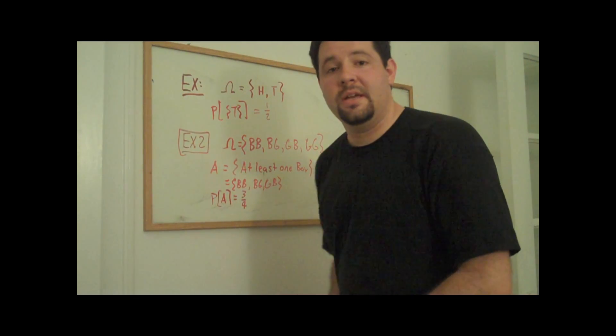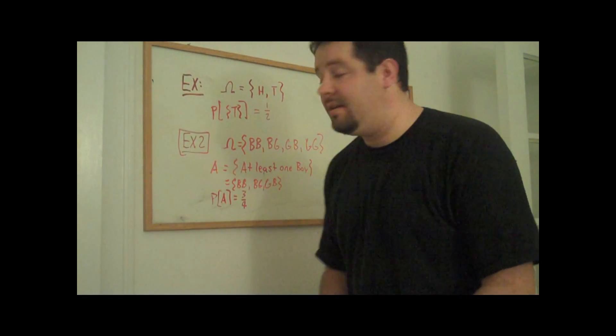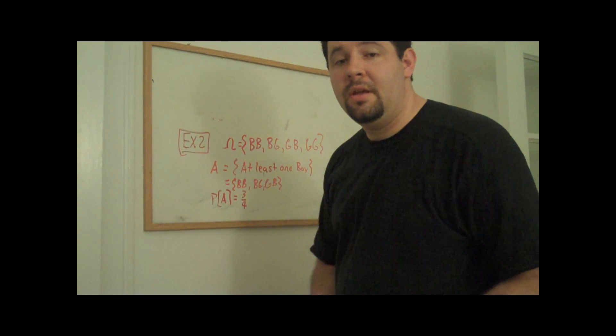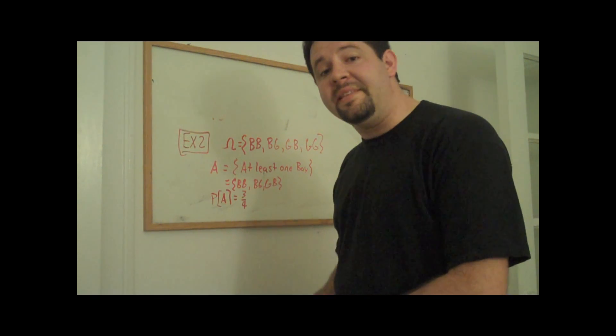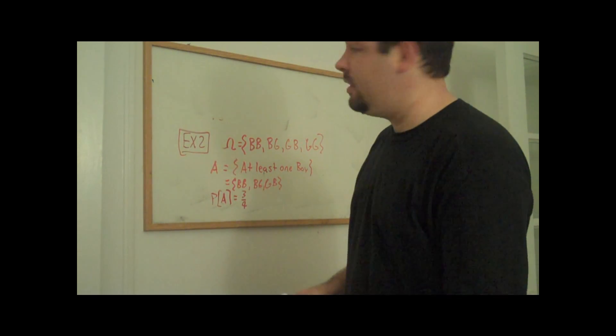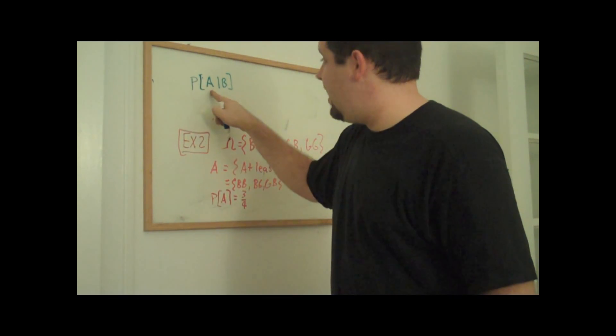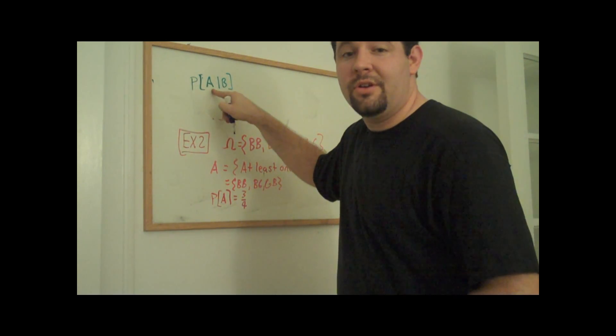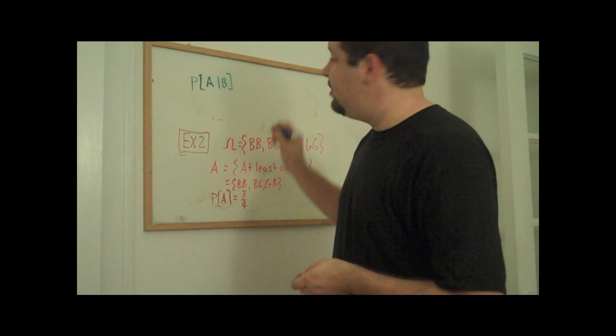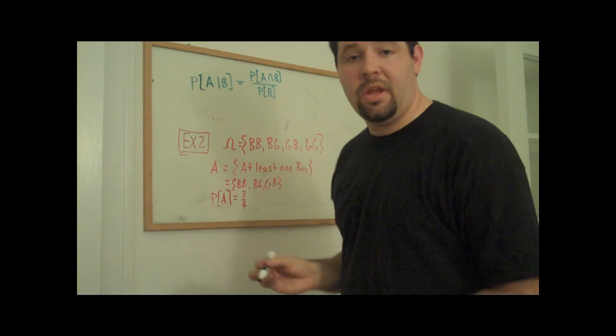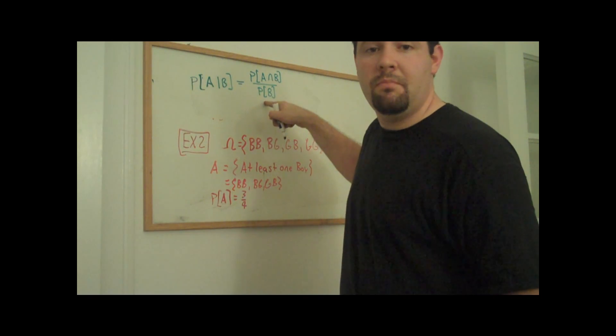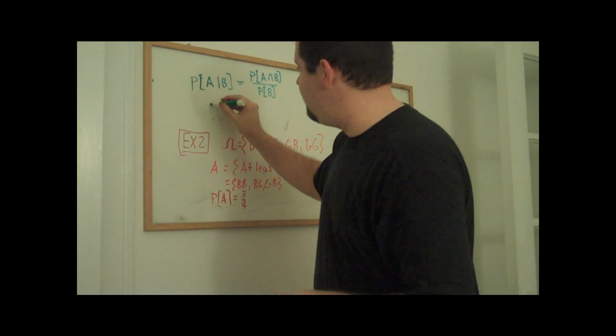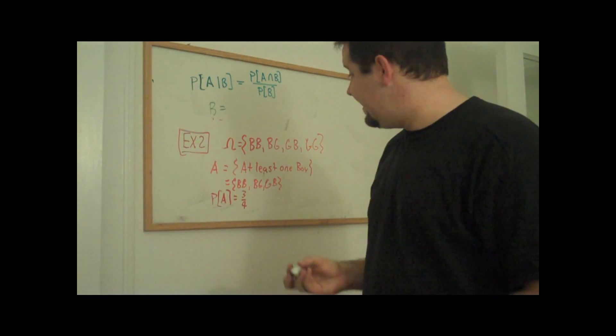This example can actually be extended. But to extend it we need to think about a different notion of probability, in particular conditional probability. Conditional probability is a probability of one set given that the other event actually occurred. We denote it as probability A given B where B is the event that we know occurs but we're wondering whether A actually occurred. We can actually compute this by definition as the probability that A and B happened divided by the probability that B occurred.